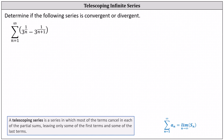Determine if the following series is convergent or divergent. We have the sum from n equals 1 to infinity of the difference of 3 to the power of 1 divided by n and 3 to the power of 1 divided by the quantity n plus 1.